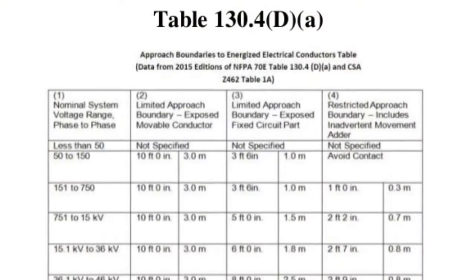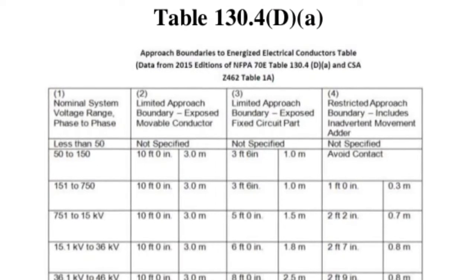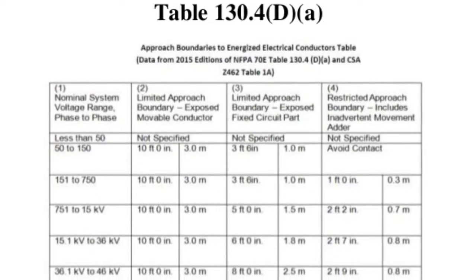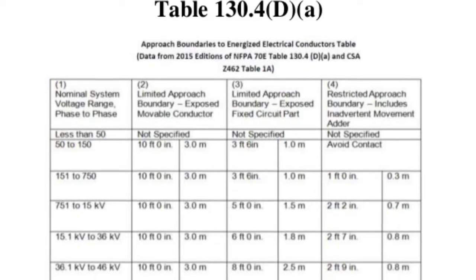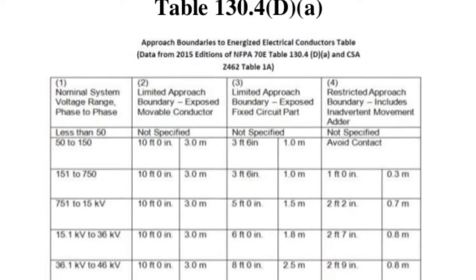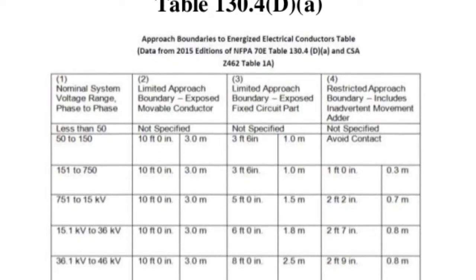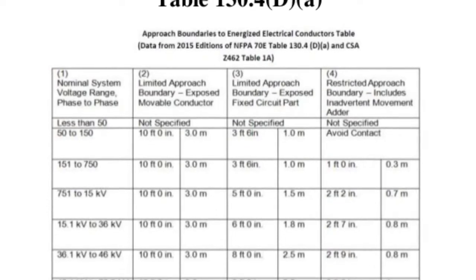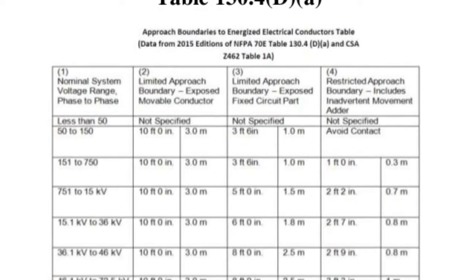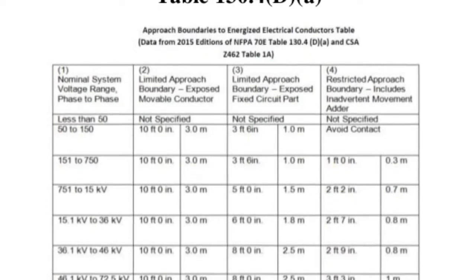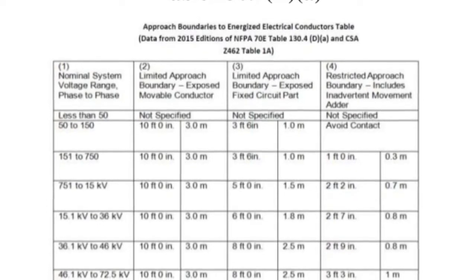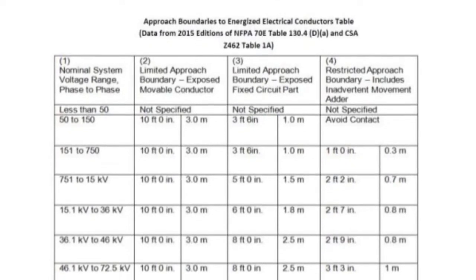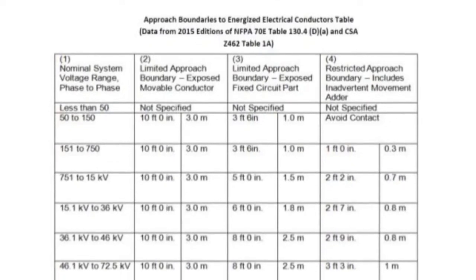Table 130.4 D-A in the NFPA 70E defines shock protection and approach boundaries for exposed energized electrical conductors for alternating current systems. The table shows nominal system voltage in column 1, limited approach boundary in columns 2 and 3, and restricted approach boundary in column 4. This table, along with the NFPA 70E, can be found in the safety reference job in Procore.